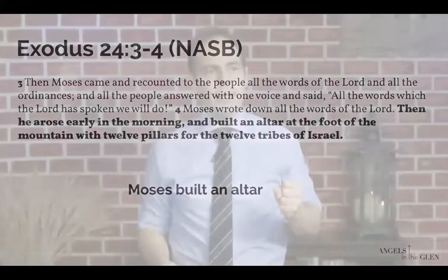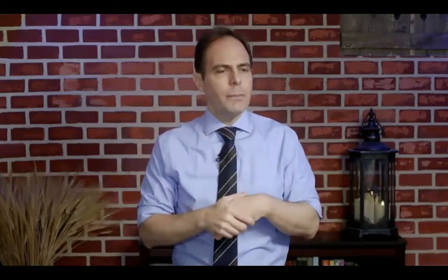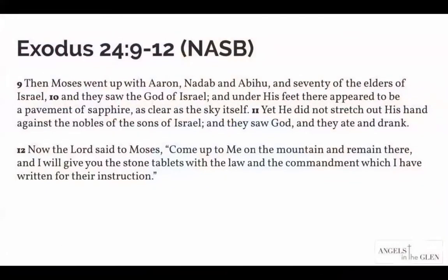Verse 9 — this is where it gets very interesting. Exodus 24:9-11: 'Then Moses went up with Aaron, Nadab and Abihu, and 70 of the elders of Israel, and they saw the God of Israel. And under his feet there appeared to be a pavement of sapphire as clear as the sky itself. Yet he did not stretch out his hand against the nobles of the sons of Israel, and they saw God and they ate and drank.' They were the only ones allowed to go up to the Lord on the mountain — consecrated and set apart — and they ate and drank.